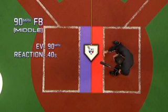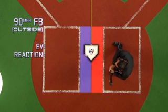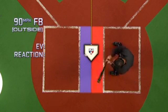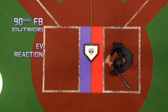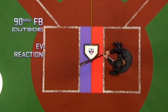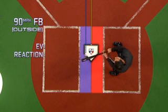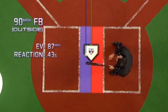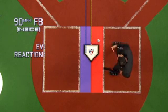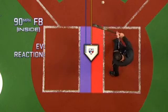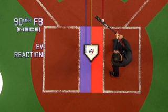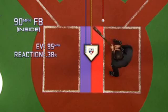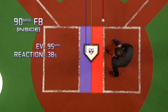Now if you take that same 90 mile per hour fastball and move it away, I have a little bit more time. I have to wait a little bit deeper to put my swing on that ball, making contact a bit further back — taking it to left field. I have more time, so that 90 mile per hour fastball now really seems like 87. Now take that same 90 mph and move it inside. I have to make contact out in front, I have less reaction time, I have to be quicker. The reaction time is about 0.38 seconds — equivalent to maybe a 95 mile per hour fastball inside. That's the key to understanding Effective Velocity.